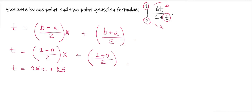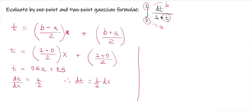Now we will perform derivation with respect to x, because in the equation we have dt, so we need a replacement for dt also. So dt upon dx equals the derivative of 0.5x plus 0.5, which gives dt equal to one by two dx.